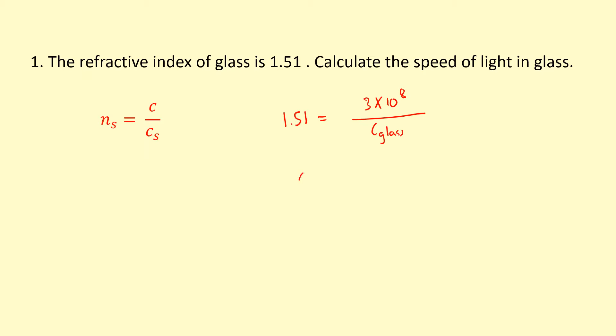Okay, rearranging this, the speed of light in glass is equal to 3 times 10^8 over 1.51, and that gives me 1.99 times 10^8 meters per second. So the speed of light in glass is almost two thirds the speed of light in vacuum, slower.